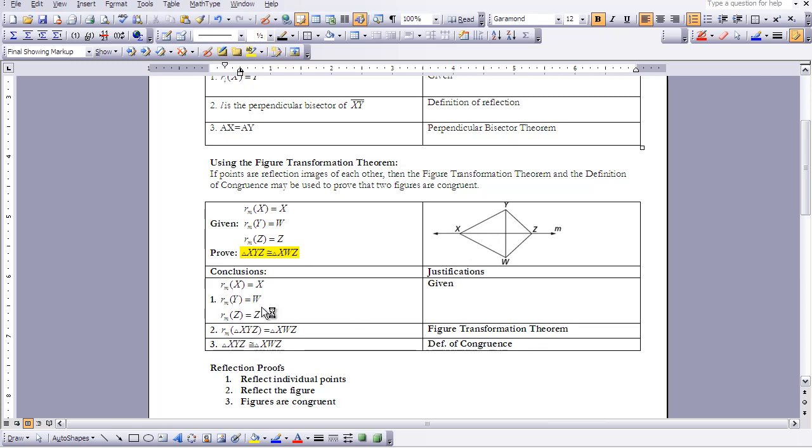I rewrite the given, stating that each of those individual points have been reflected, using given as my justification. From Chapter 4, we know that if individual points of a figure have been reflected, we can then say the figure has been reflected.